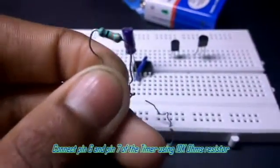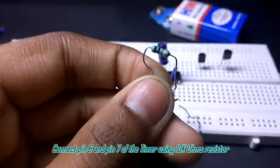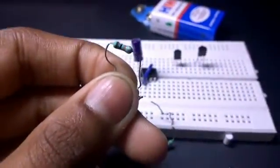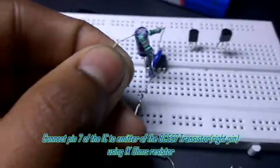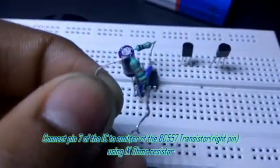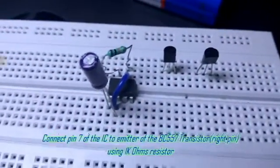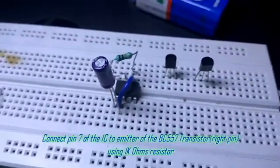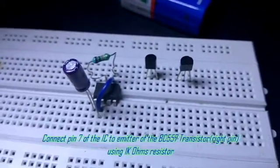Now taking your 1k resistor, connect pin 7 of the IC to emitter, that is the right pin of the BC 557 transistor.